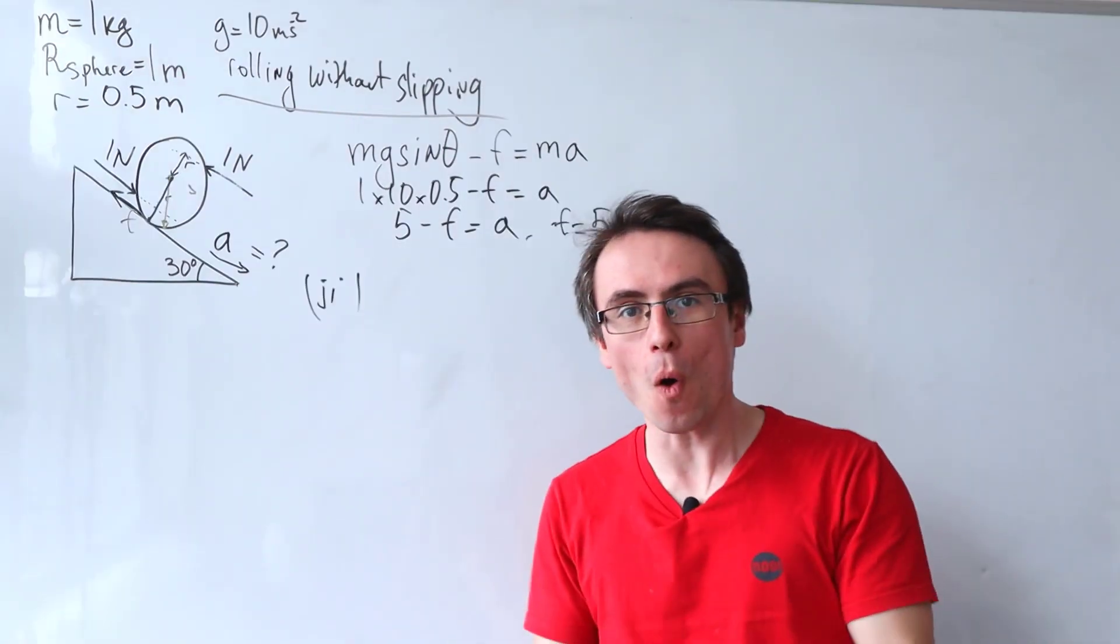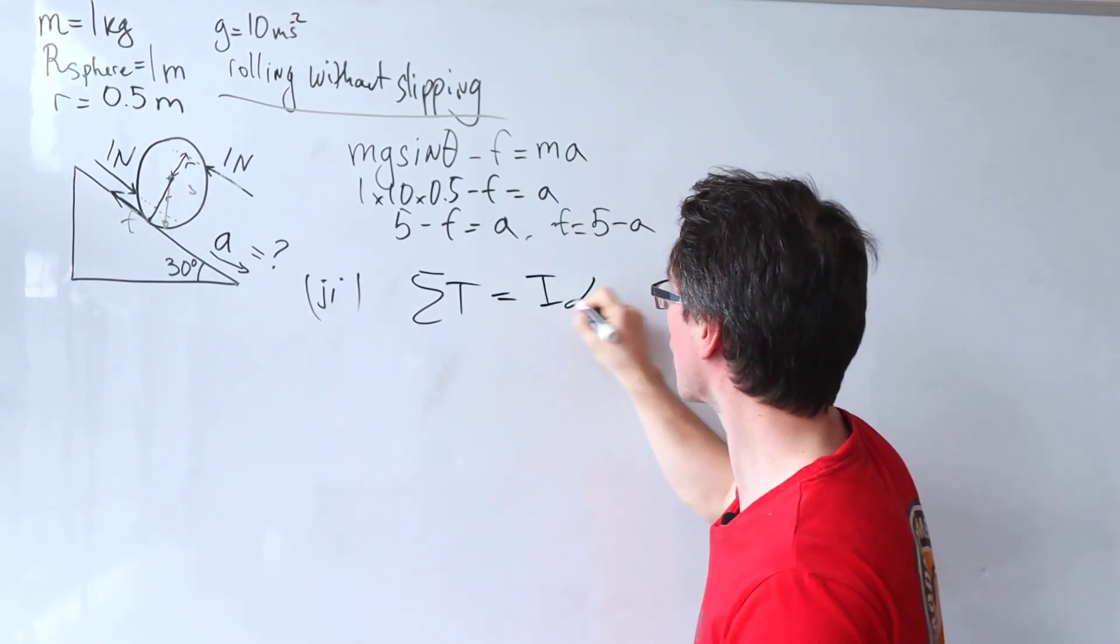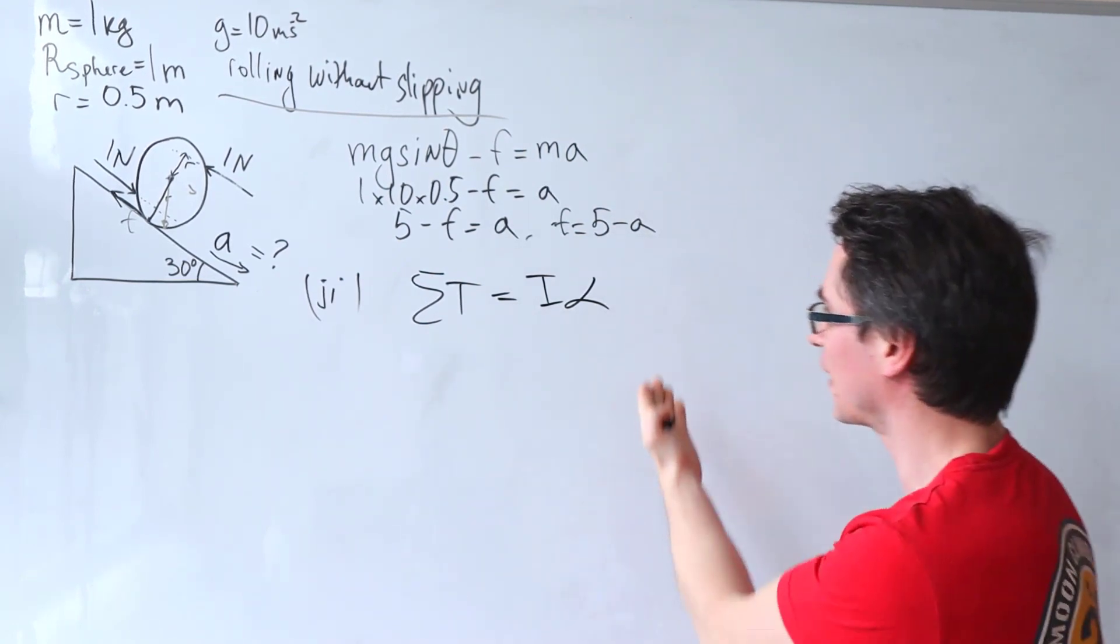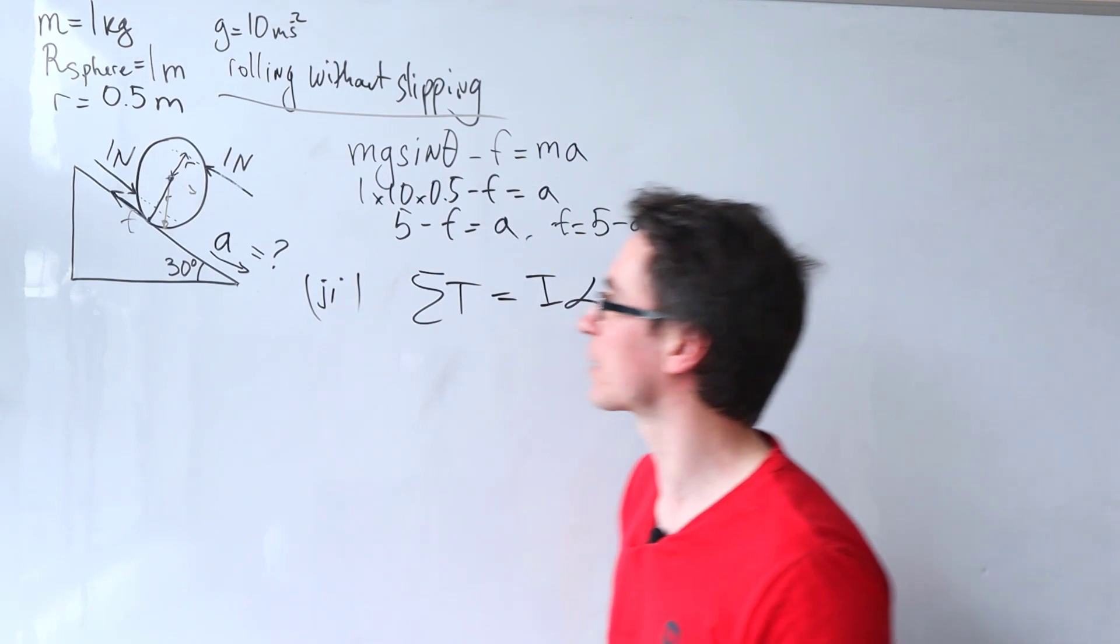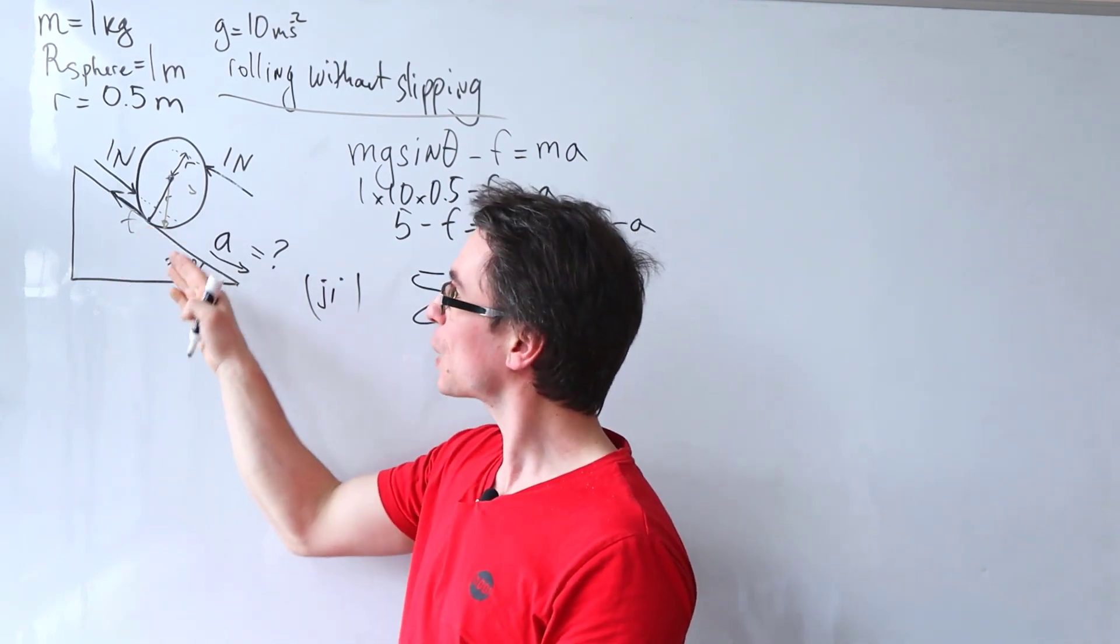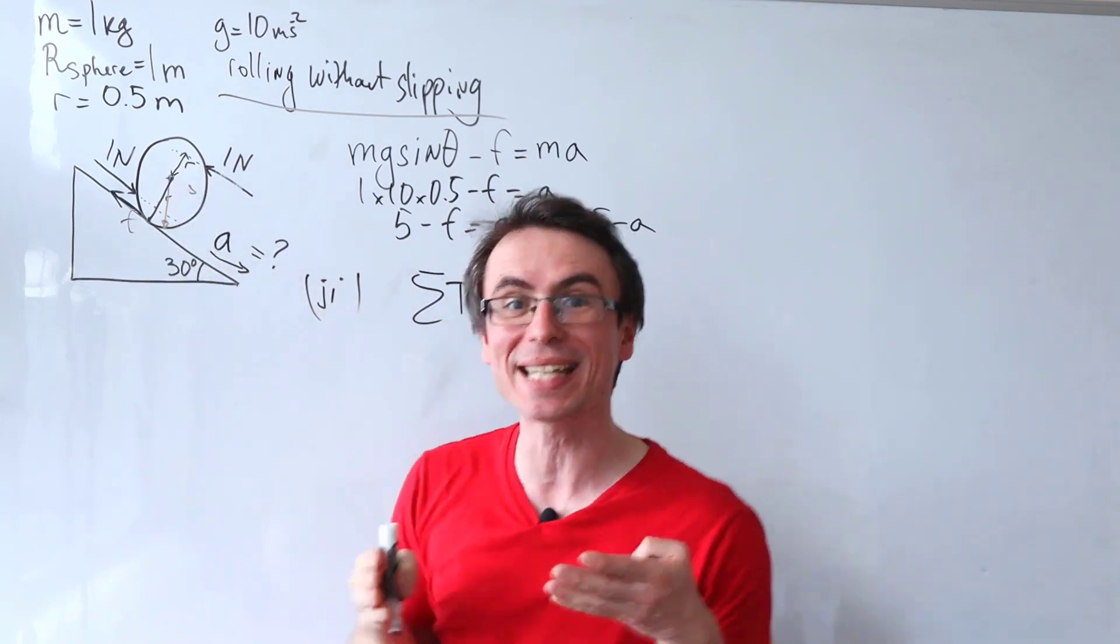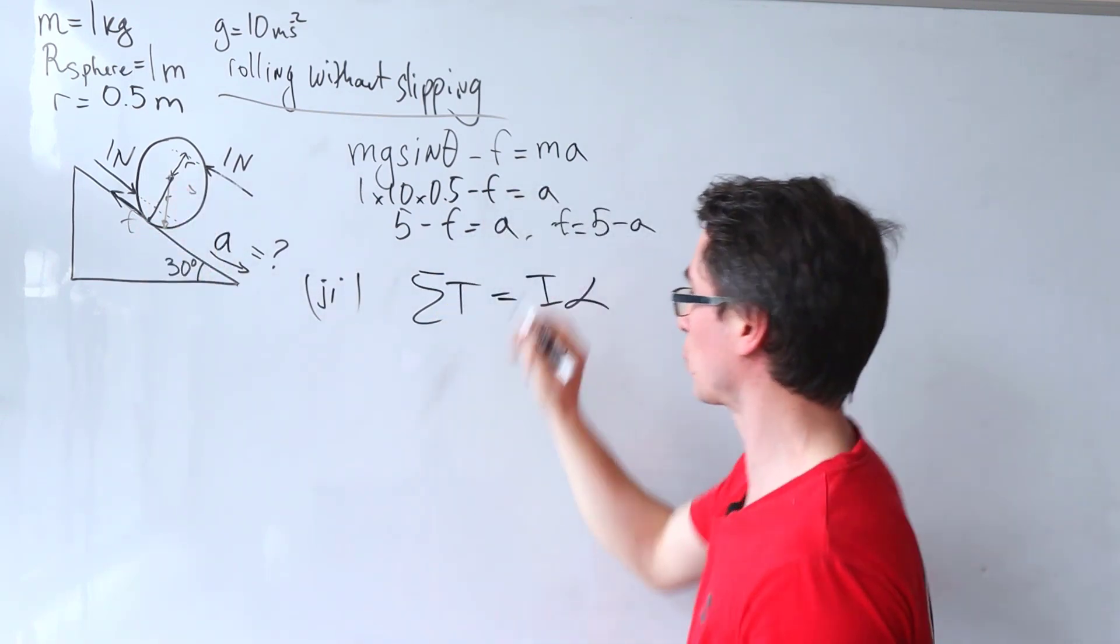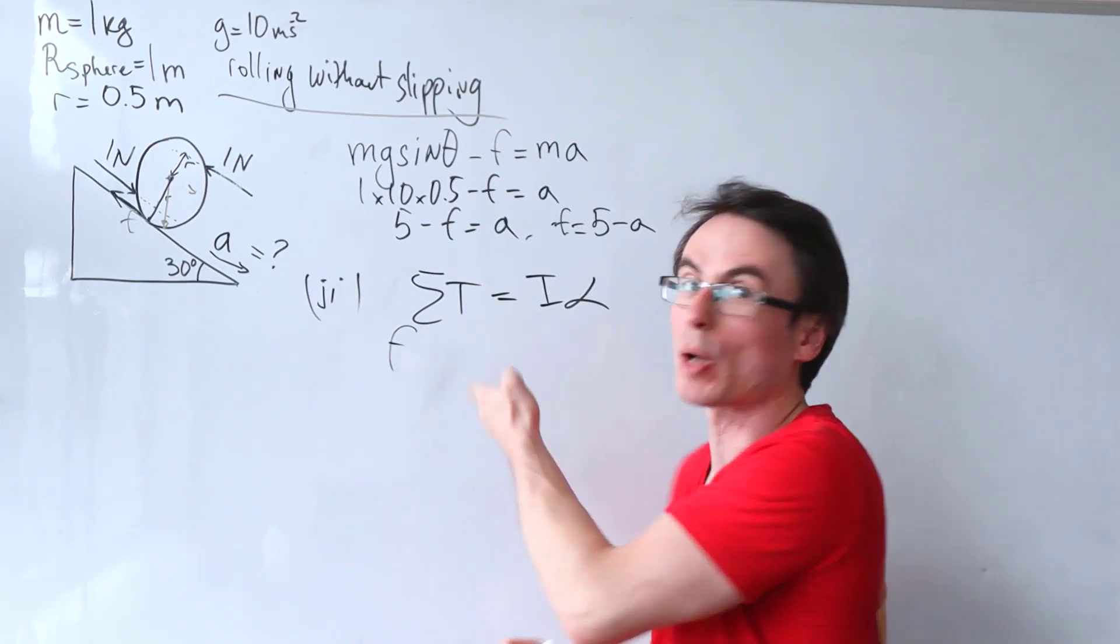So the sum of all torques will actually be equal to the moment of inertia times the angular acceleration. Now, what are all the torques that are acting on this? First of all, we have the frictional force, which is acting at a distance of 1 meter from the axis of rotation. So the torque that is going to produce will just be equal to F times 1.